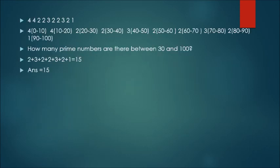The first line represents some numbers: 4, 4, 2, 3, 2, 2, 3, 2, 1. These numbers represent the count of prime numbers present within certain ranges. For example, there are 4 prime numbers from 0 to 10, and 4 prime numbers from 10 to 20, and so on.